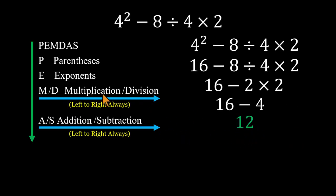Multiplication and division are equals. Addition and subtraction are equals. And when equals show up side by side, always go from left to right.